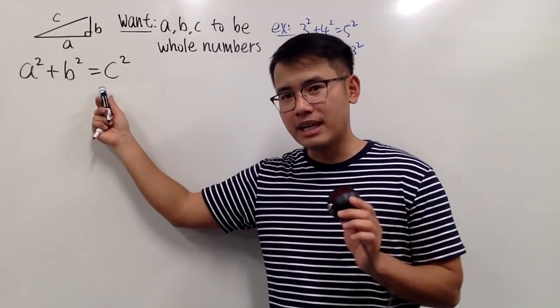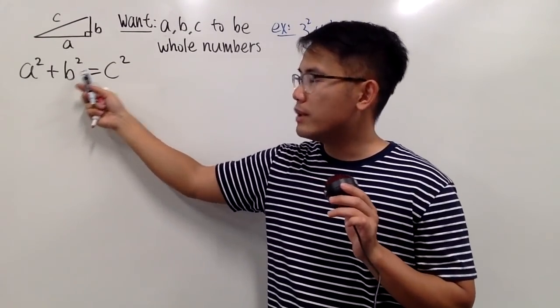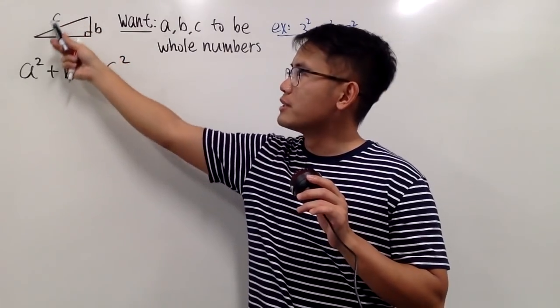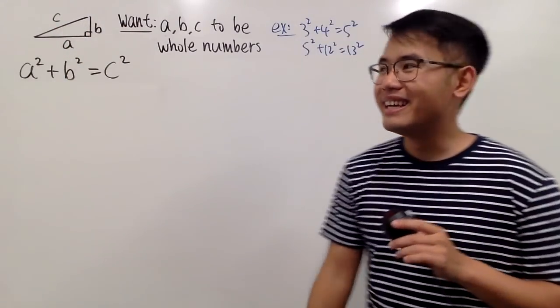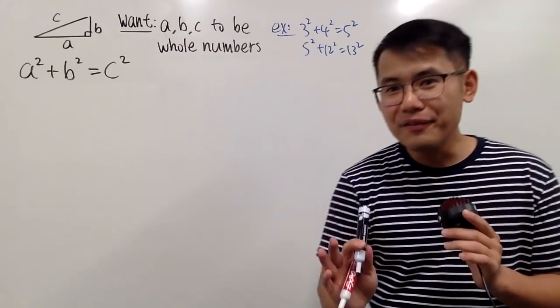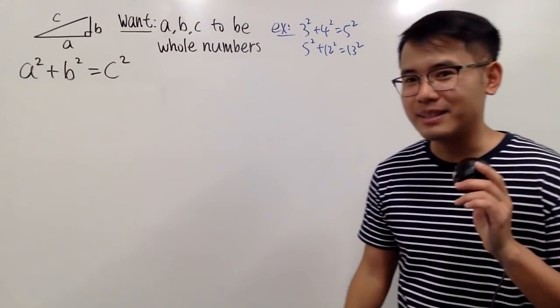Okay, as we all know, this right here is the Pythagorean theorem. A squared plus B squared equals C squared, where A, B, C are just the sides of the right triangle, and C is the longest side, namely the hypotenuse. And that's pretty cute. However, we are all adults now, so let's do something more challenging.